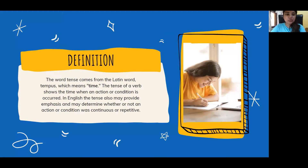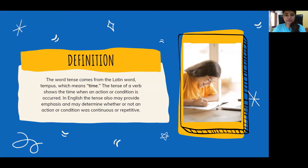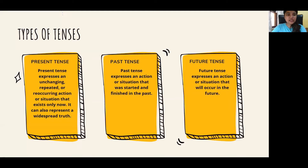The word tense comes from the Latin word tempus, which means time. The tense of a verb shows the time when an action or condition occurred. In English, the tense also may provide emphasis and may determine whether or not an action or condition was continuous or repetitive. There are three types: present tense, past tense, and future tense.